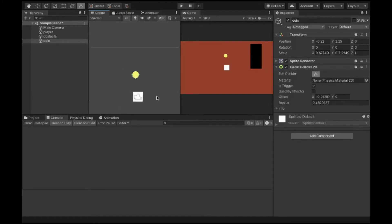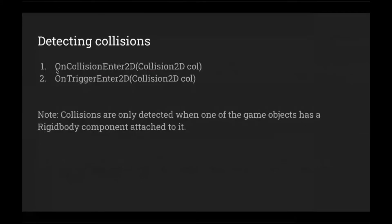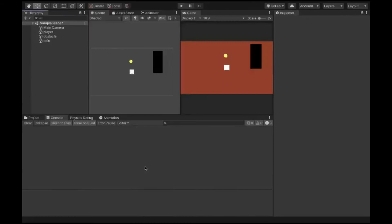Unity registers collisions in two ways. The first is called OnCollisionEnter2D — I'm talking about 2D here, so you add '2D'; for 3D games you just remove it. The second is OnTriggerEnter2D. Remember, collisions are only detected if one of the game objects has a Rigidbody attached to it.